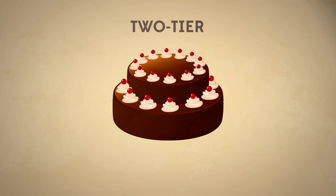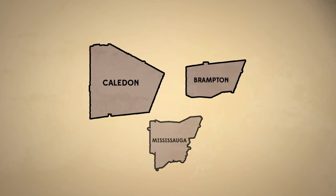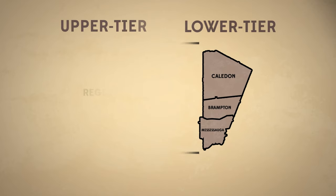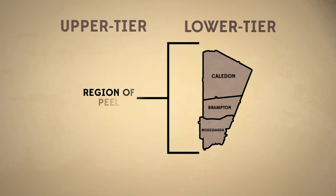In a two-tier system, several lower-tier municipalities are grouped together under the umbrella of an upper-tier municipality. An upper-tier municipality is responsible for larger regional services, like policing and waste management. Brampton, Mississauga, and Caledon are lower-tier municipalities, and the region of Peel is the upper-tier municipality.